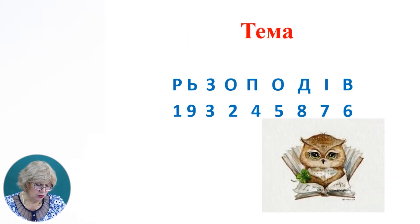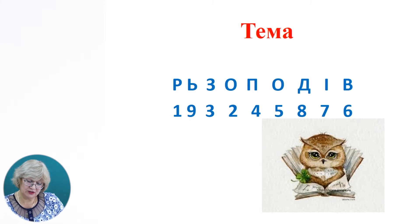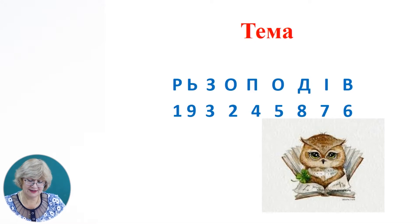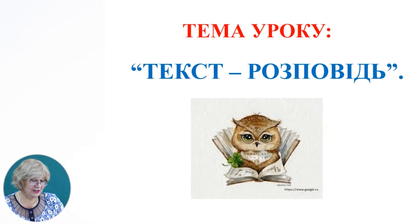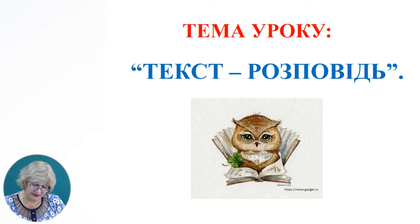Зверніть увагу. У сови трапилась біда — букви з цифрами перемішались. Над кожною цифрою є буква. Поставте цифри у порядку зростання від 1 до 9 з відповідними буквами і прочитайте, яке слово у вас вийде. У мене вийшло слово «розповідь».